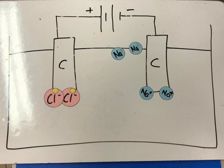The sodium metal formed is in a molten state because of the high temperature of the molten sodium chloride electrolyte. The metal formed will also float above the electrolyte because of its lower density.